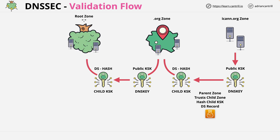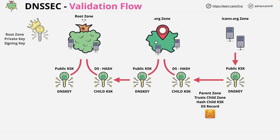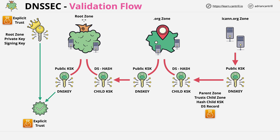At the DNS root zone level, we hit a problem because there's no parent zone to provide this trust. The root zone has a public key signing key, and this — along with the corresponding private root key signing key — is explicitly trusted. I'll talk about how this explicit trust works in the video dedicated to the key signing ceremony. But at this stage, just take it as fact that the root key signing keys are trusted explicitly. They're known as a trust anchor, and every DNSSEC-capable client or resolver by default trusts these keys, because there's no parent zone to the root zone — this has to be a trust anchor, something that just is.